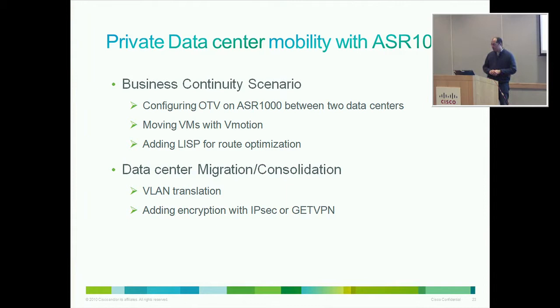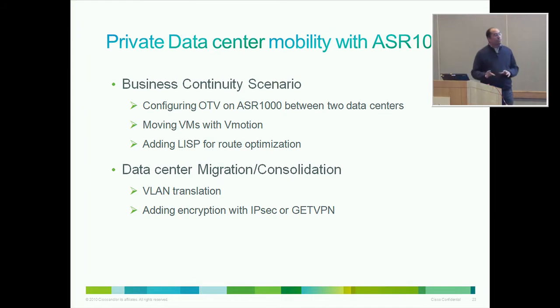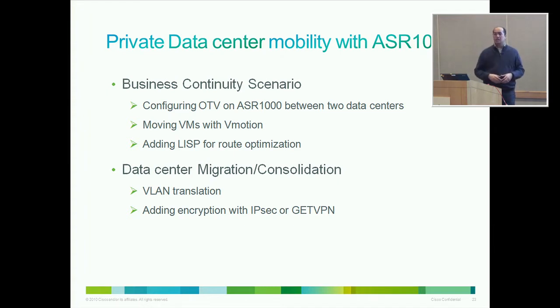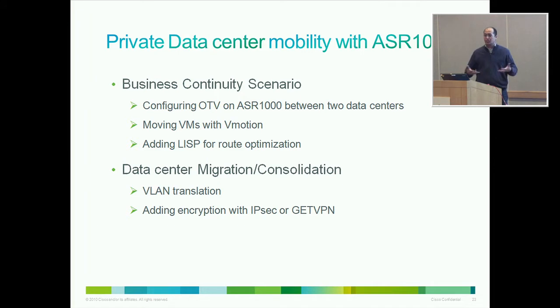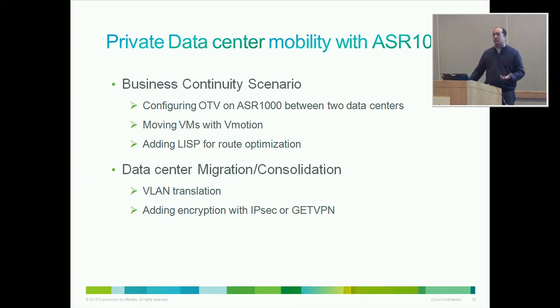This is just a high level overview of the technology and most of you are probably familiar with OTV by now. In my demo I want to show two things. The first is basic: having different data centers physically separated by a layer three core network to simulate a service provider. We're going to move VMs across the data centers using an OTV tunnel built on ASR 1000. I also want to talk about some new enhancements like LISP, which we support with OTV for route optimization.